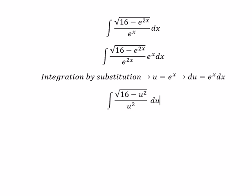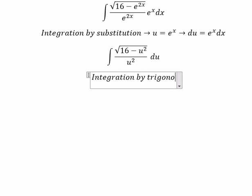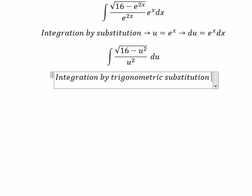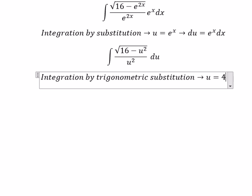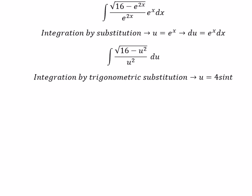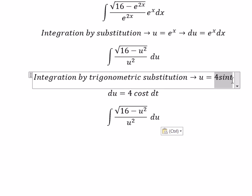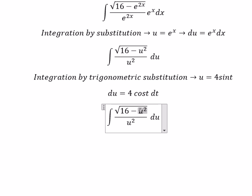Next, we need to use integration by trigonometric substitution. So we put u equal to 4 cos t, and we get du equal to 4 cos t dt. So we put this in here, and we get 16 cos t squared.